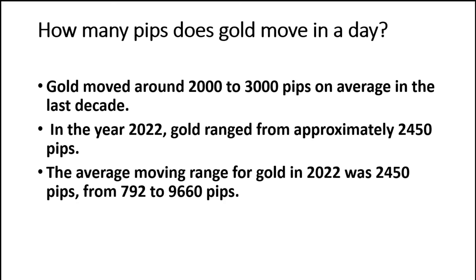If you trade euro dollar or British pound dollar, you know that a stop loss can be around 100 pips on average, because during one day, euro dollar can go up or down 100 pips. If you're a swing trader, you'll have around 100 pips stop loss. If you're a daily trader and you trade very often — a couple of hours — usually we use around 25% of the daily average true range, which is around 25 pips.